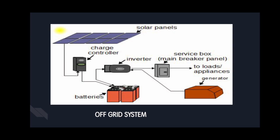an electric generator is usually added to the system. The generator is used as a power source during periods of excess production or unusual demand. This type of system is installed in remote areas. It generates enough power, and during power cuts it can be used.